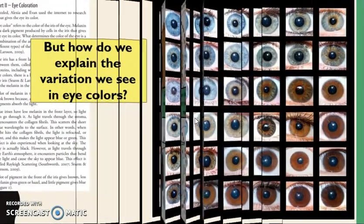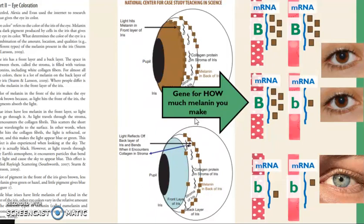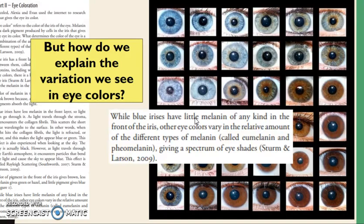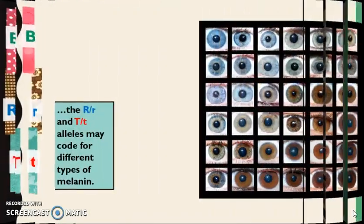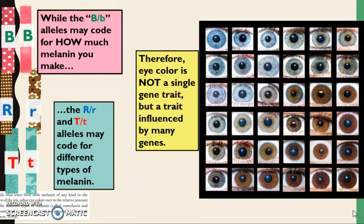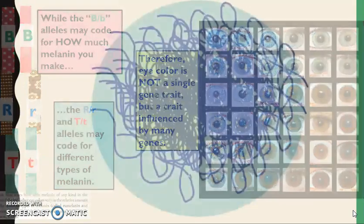When we look at eye color, it comes down to our phenotype being the type or amount of protein we make. While blue eyes have little melanin of any kind, the other eye colors vary by the relative amounts of different types of melanin, giving a spectrum of eye shades. While the B allele may code for how much pigment you make, the R and T alleles may code for different types of melanin. Eye color is a trait influenced by many different genes interacting together.